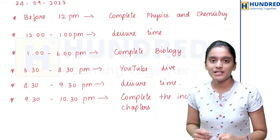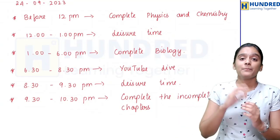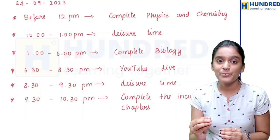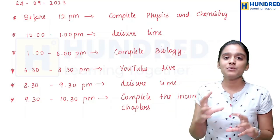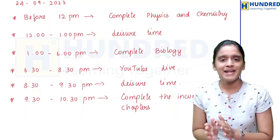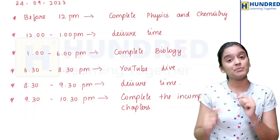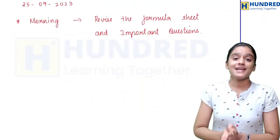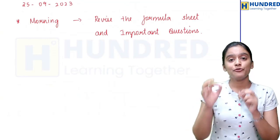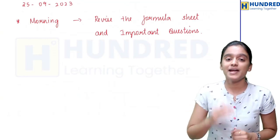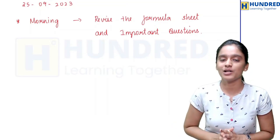From 8:30 to 9:30, have your dinner and relax. From 9:30 to 10:30, complete any incomplete chapters or book-back questions — complete everything you can. If you want to review anything, you can use remaining questions. On the 25th morning before the exam, revise the formula sheet and important questions, and recall compulsory problems once.